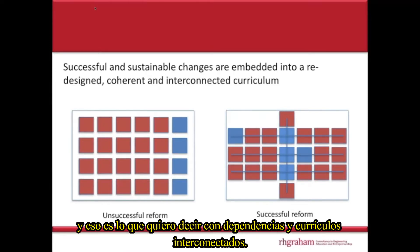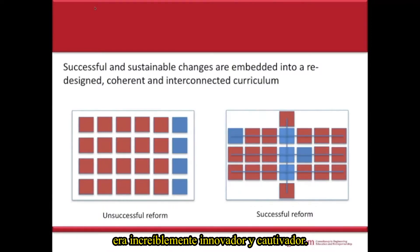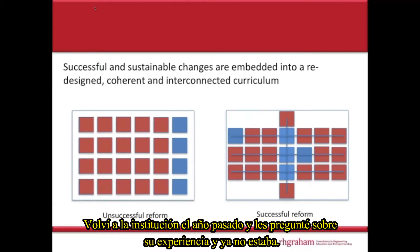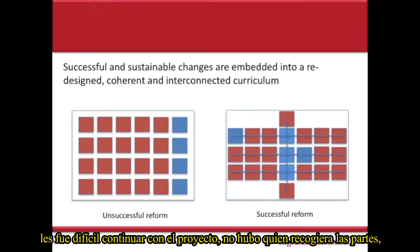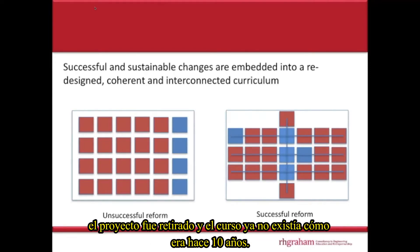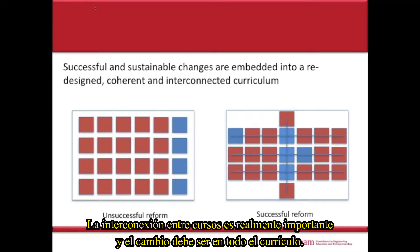That's what I mean by dependencies and interconnected curricula. I'll give you an example of an unsuccessful reform. About five or six years ago in the UK at a different institution, there was a really incredibly innovative and engaging project — I spoke to the students, it really was wonderful. It covered half of the first year. I came back to the institution last year and asked about it, and it had gone. It had gone because the two people leading it burnt out and found it very difficult to continue. No one else knew what was happening within those courses or appreciated the impact on students, and the course went back to how it was ten years ago.